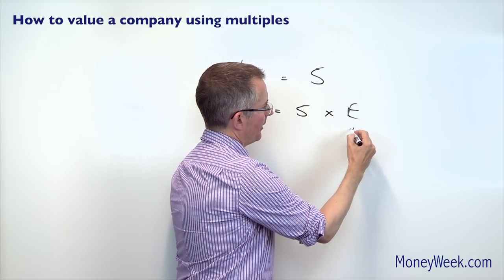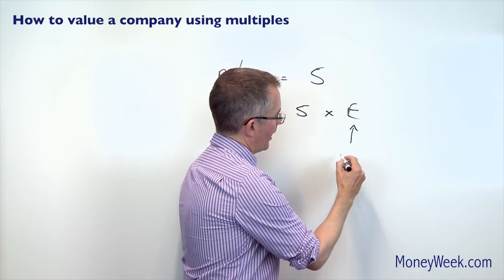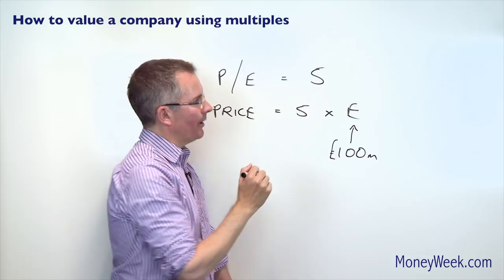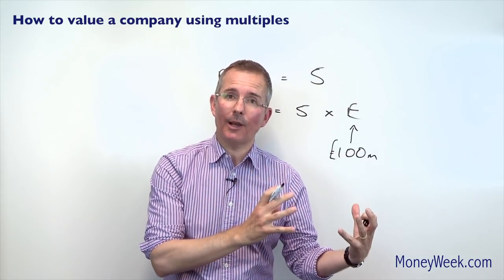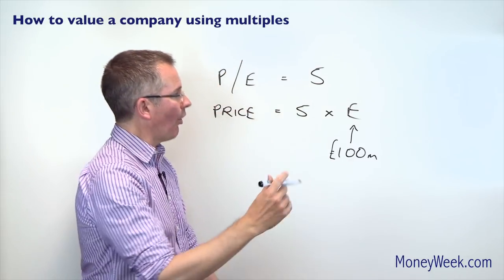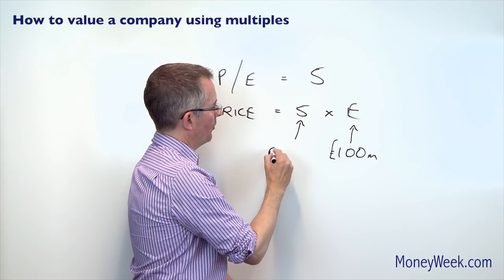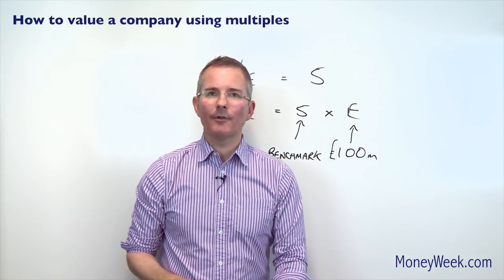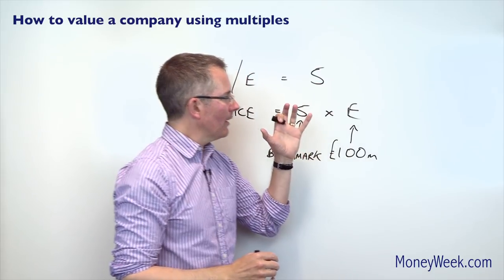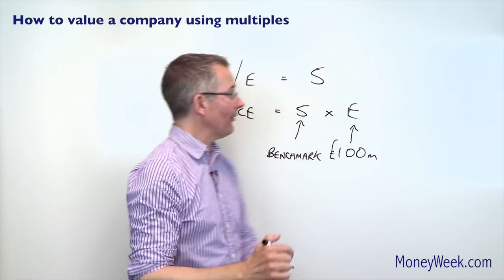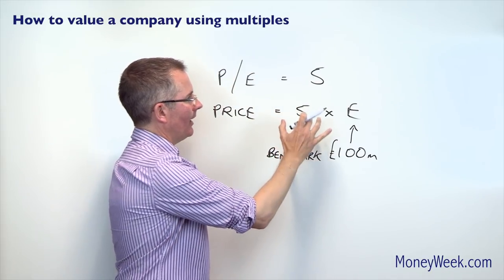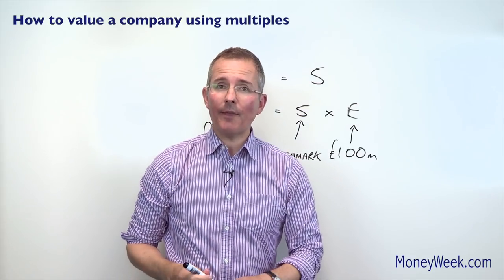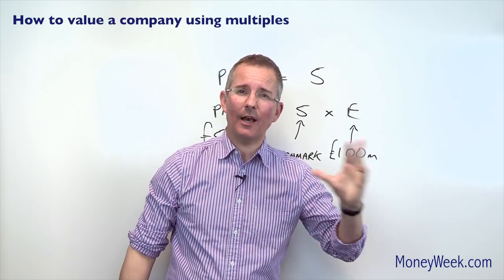Say you have an earnings figure for the company you're trying to value — a realistic earnings figure of £100 million. You've gone out and found comparable publicly quoted firms, and decided those benchmark firms typically have a P/E ratio of 5. So the expected value of this company is 5 times £100 million, which is £500 million. Very quick and dirty.